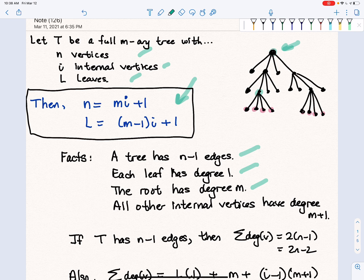So the root has degree M, but if you look at any other internal vertex, it's going to have one more because it has M children plus one connection from its parent. That means M plus 1.